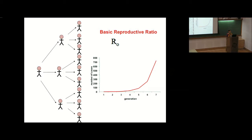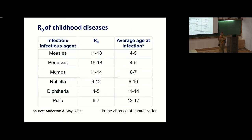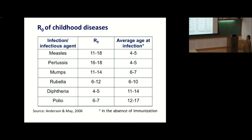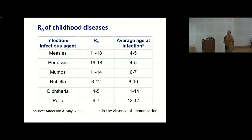There are several diseases for which R0 values have been calculated — books exist with bigger lists. Some of these you know: measles, pertussis, mumps, rubella, diphtheria, polio. These are all childhood diseases. The R0 values and average age at infection are given here, all in the absence of immunization. Some have very high values — 16 to 18 means each individual in a wholly susceptible population infects 16 people. Polio and diphtheria are lower, but still high.